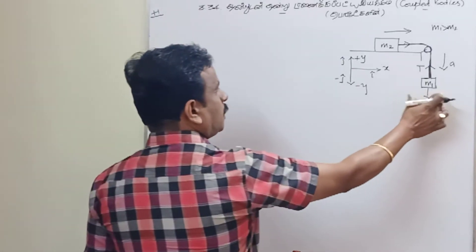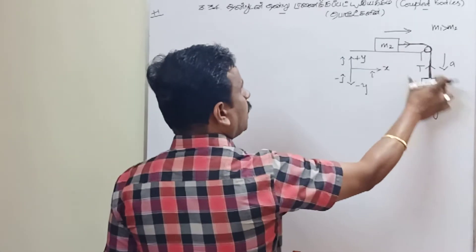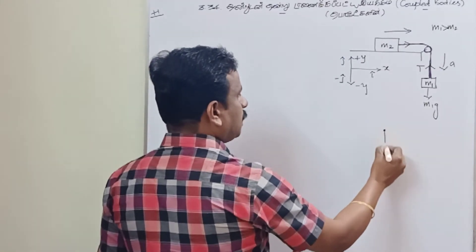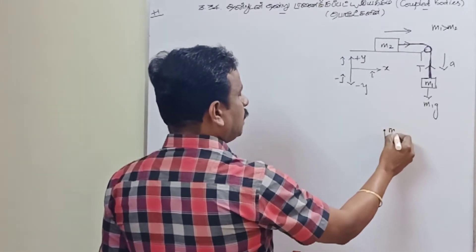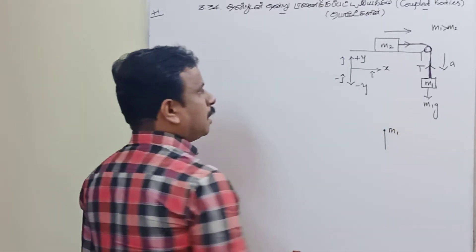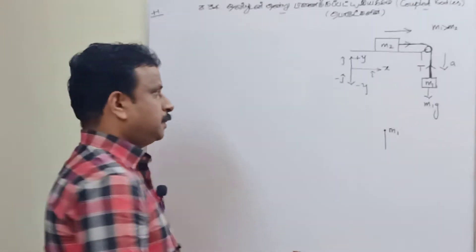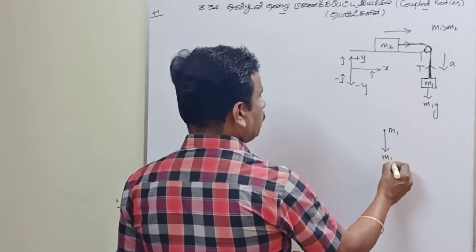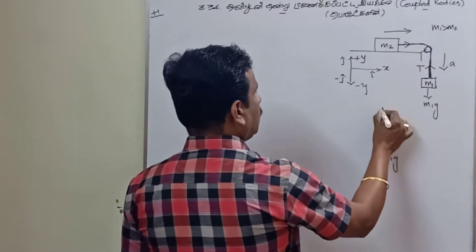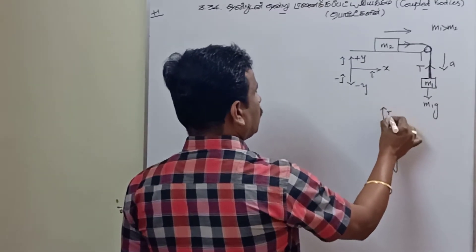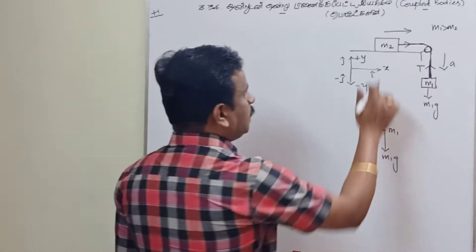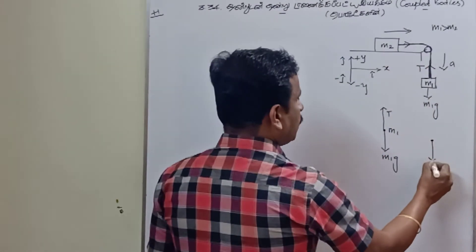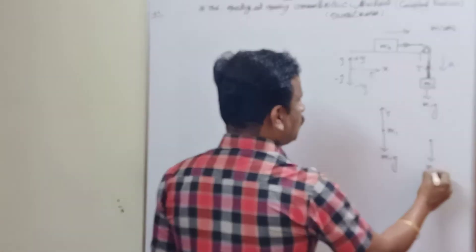You should remember: suppose m1 is greater than m2, then we draw the free body diagram (FBD). The FBD procedure is the same as before. For the hanging block m1, the force m1·g acts downward, and tension T acts upward along the rope.